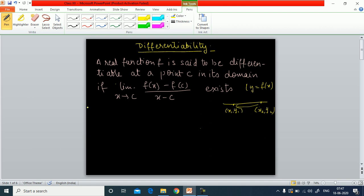So keeping this in mind, we will go through the definition of a differentiable function. A real function f is said to be differentiable at a point c in its domain if limit x tending to c, f(x) minus f(c) over x minus c exists. So if this limit is existing for this ratio, then only we can say that the function is differentiable.